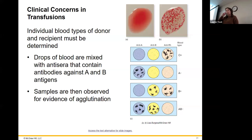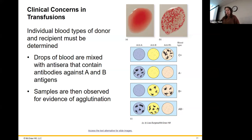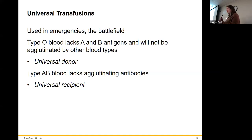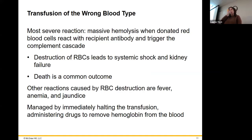When testing blood, the basic idea is to mix anti-A antibodies with your blood and see if it clumps together from agglutination — that means you are type A. For transfusions: type O doesn't have A or B, so anybody can get it — universal donor. If you are an AB person, you don't have any antibodies to A, B, or O, so you can get anything — universal recipient.